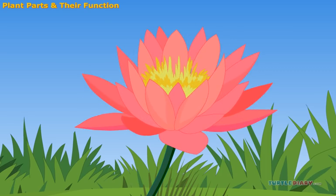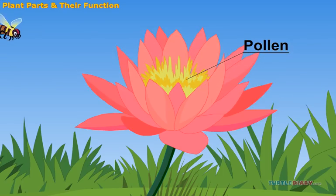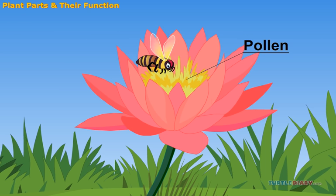Many flowers make pollen. Pollen has to be blown to the other plants by the wind or carried by an animal like a bee or a bird.